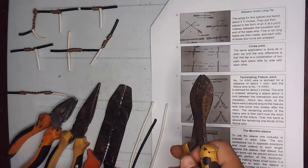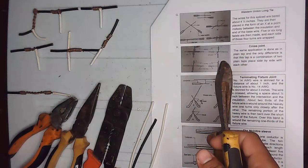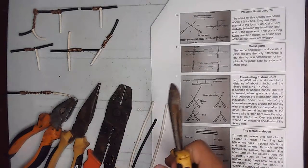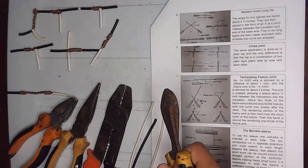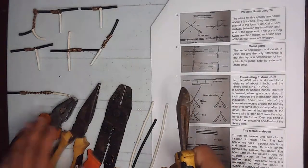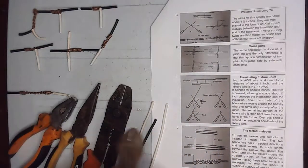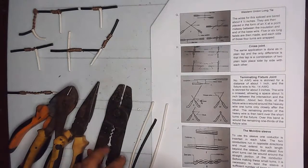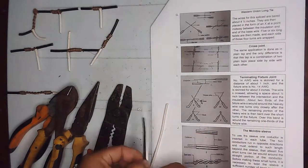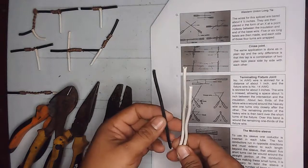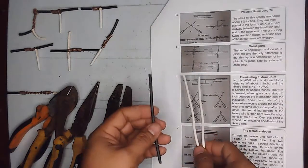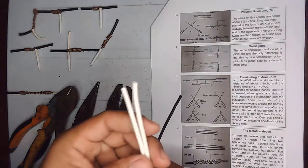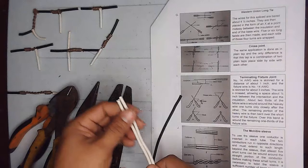Okay, so the next wire splice we will make is the cross joint. It is the combination of two plain top joints. The tools we will use are the combination pliers, the long nose, the side cutter pliers, and the wire stripper. We have three wires here - the main wire and the two top wires will be joined as a cross joint.